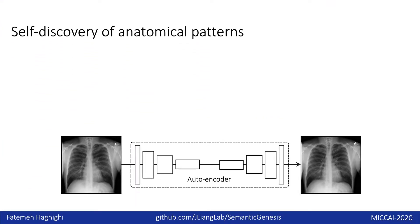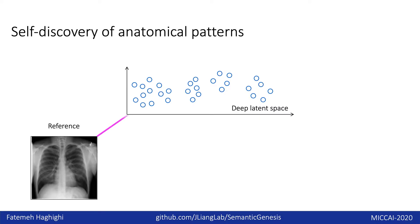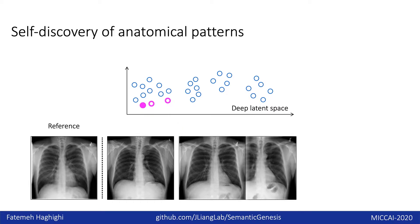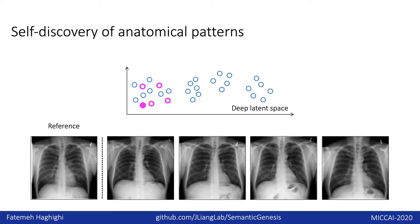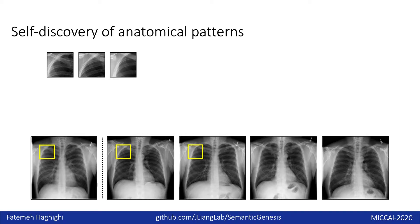Self-discovery is to build a set of anatomical patterns from medical images. To do so, we first train an autoencoder to extract the deep features of each patient. Then, we randomly select a scan as a reference and search for its nearest neighbors according to the latent representations. After that, we select a unique random but fixed coordinate and crop patches across these set of similar patients.